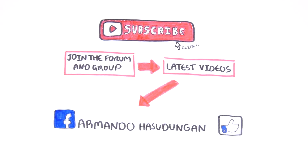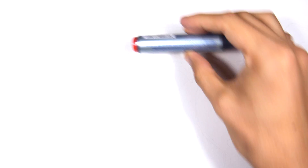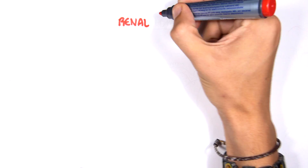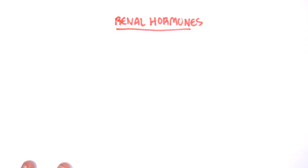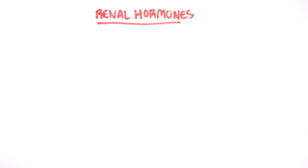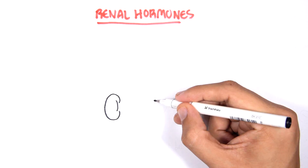In this video, we're going to look at hormones produced by the kidneys essentially. So we're looking at renal hormones, and there are three main hormones.